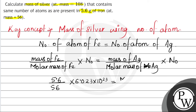This equals the mass of silver — which we have to find — divided by the molar mass of silver, which is 108, multiplied by Avogadro's number 6.023 × 10²³. By using this formula, we can find the mass of silver.